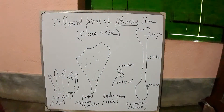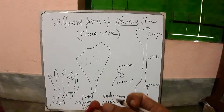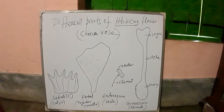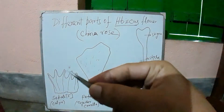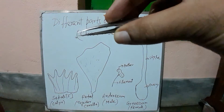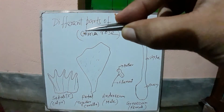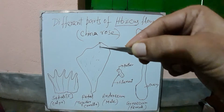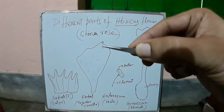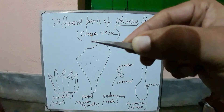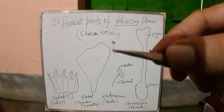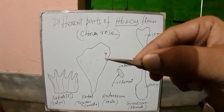And this small portion is actually the male part — that is the androecium. And the portion where I am holding is the filament. And the upper yellow color part is the anther.